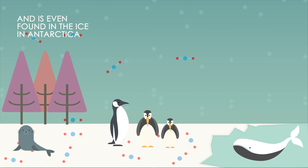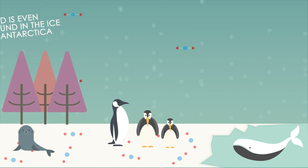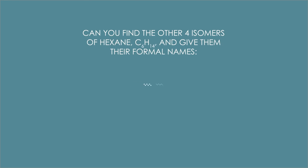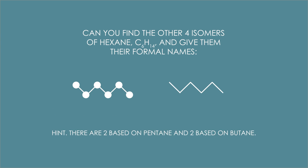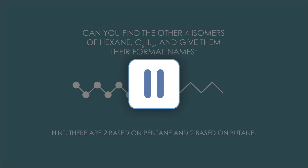So let's finish with a simpler example. Can you find the other four isomers of hexane, C6H14, and give them their formal names? There are two based on pentane and two based on butane. Pause whilst you try to draw them out.